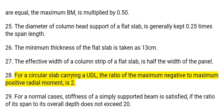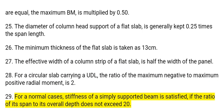28. For a circular slab carrying a UDL, the ratio of the maximum negative to maximum positive radial moment is 2. 29. For normal cases, stiffness of a simply supported beam is satisfied if the ratio of its span to its overall depth does not exceed 20.